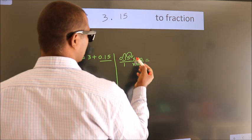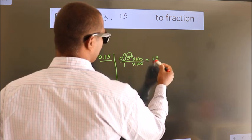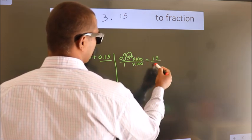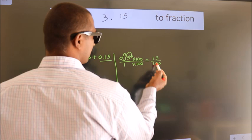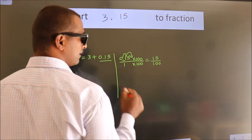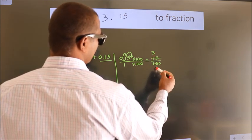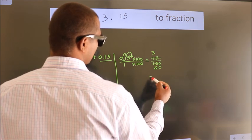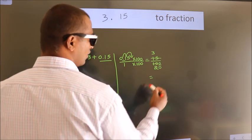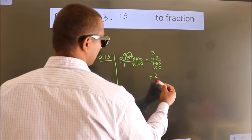0.15 times 100 equals 15. 1 times 100 equals 100. Now I cancel with 5. 15 divided by 5 is 3, 100 divided by 5 is 20. So the fraction we got is 3/20.